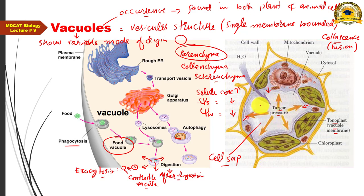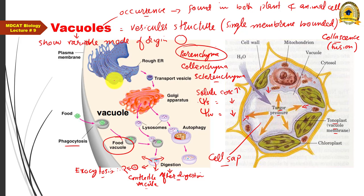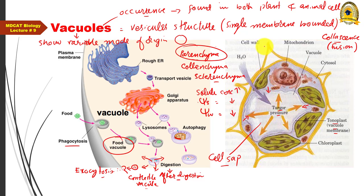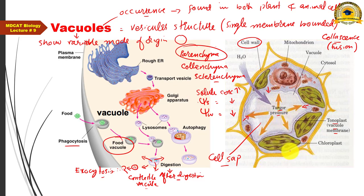The plant cell vacuole provides mechanical support through its turgor pressure phenomenon. Other structures that provide mechanical support include the cell wall, the endoplasmic reticulum to some extent, and as we will see next, the cytoskeleton. Among these, the cell wall and vacuole are the most prominently involved in mechanical support.